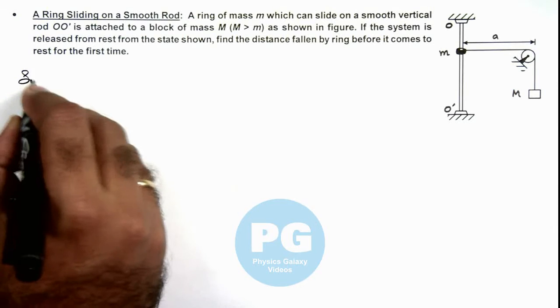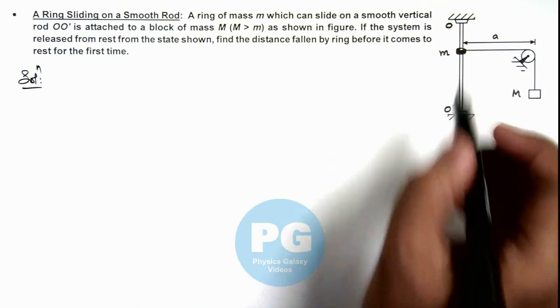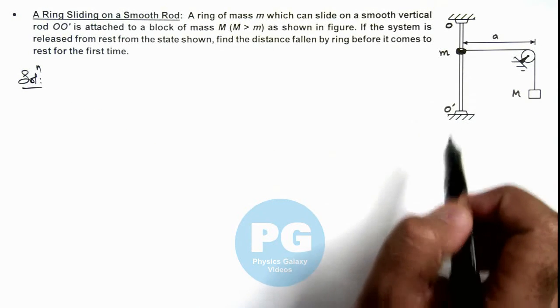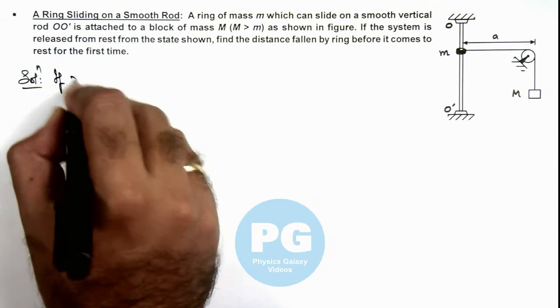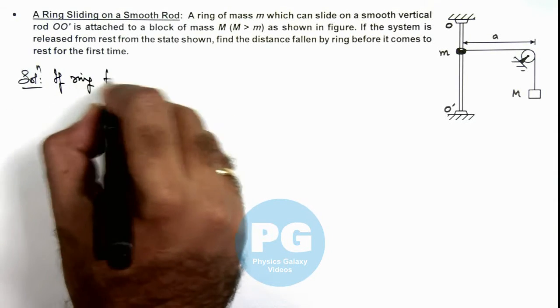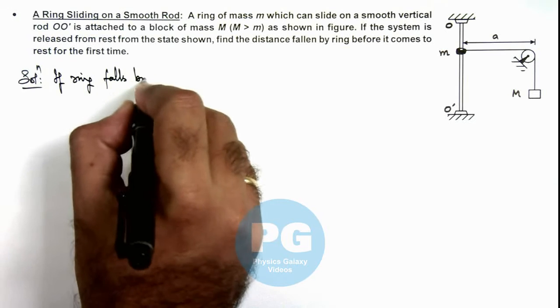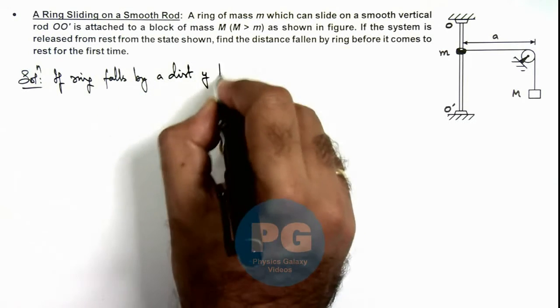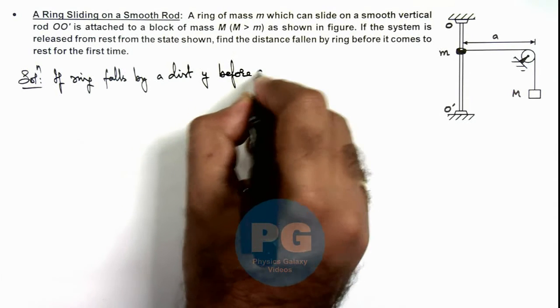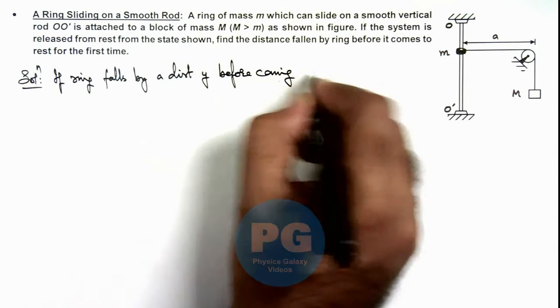Here, if we consider when we release it ring will fall down and block M will move up. So in this situation, we can write if ring falls by a distance y before coming to rest.